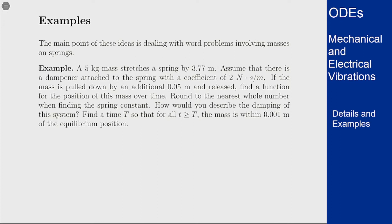So we'll start with the example. A five kilogram mass stretches a spring by 3.7 meters. Yes that's a big distance but it turns out you really can't work with problems that actually work out numerically without having weird numbers. Assume that there is a dampener on that spring with a coefficient of two newton seconds per meter. This is pulled up an additional 0.05 meters and released. Find a function for the position of this mass over time.